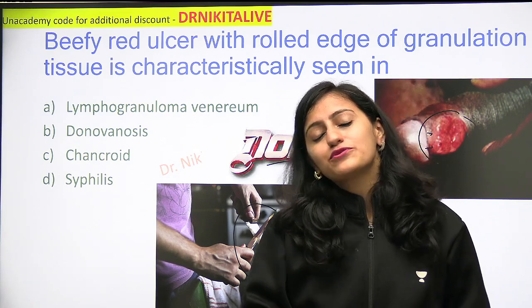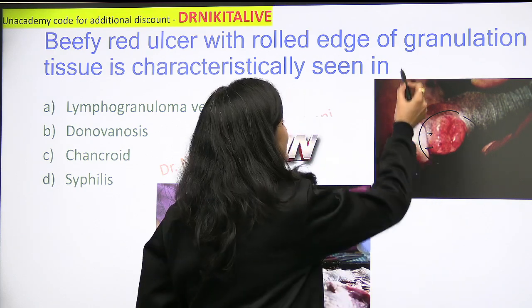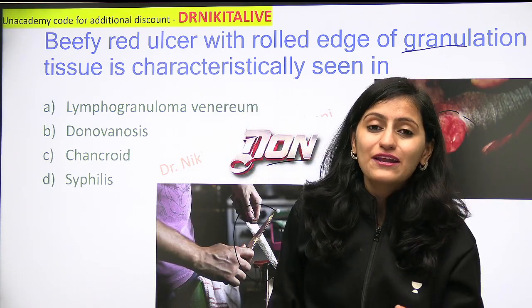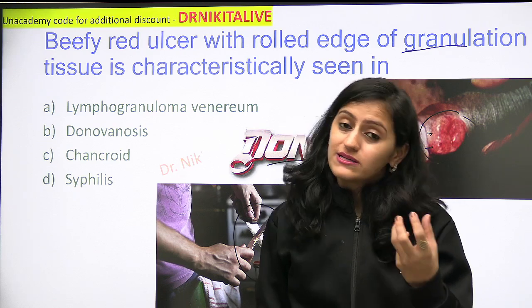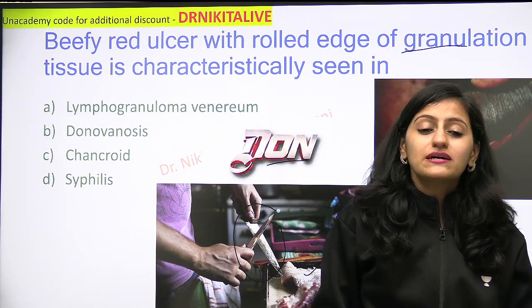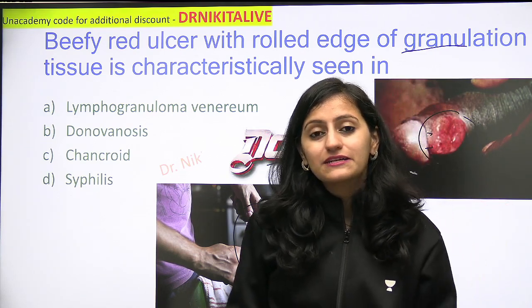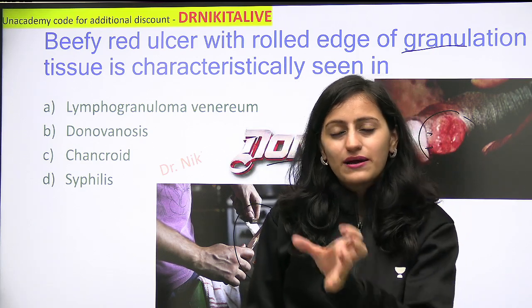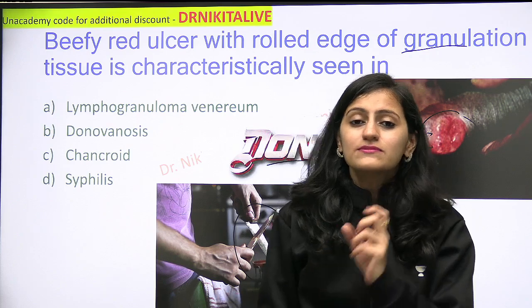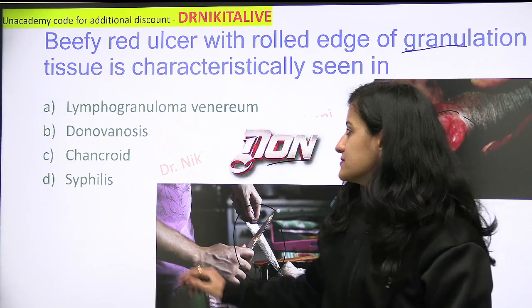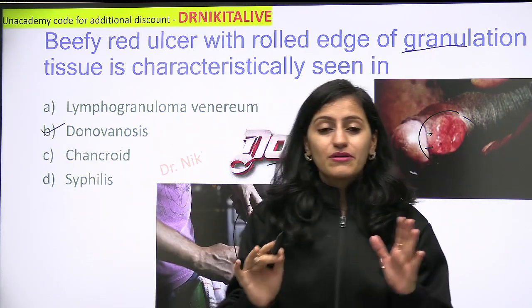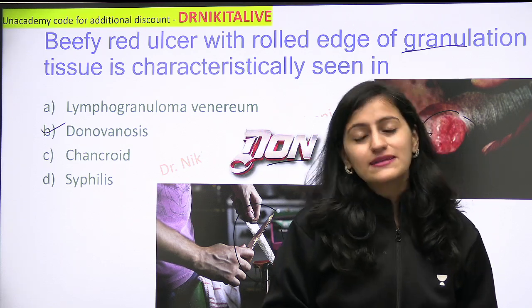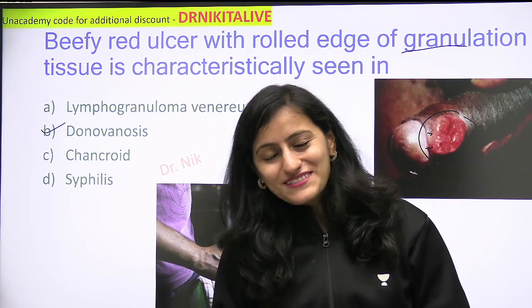The other name for Donovanosis — because it has granulation tissue — is granuloma inguinale. The organism is Klebsiella granulomatis, previously called Calymmatobacterium granulomatis. So granulation tissue, granuloma inguinale, granulomatis organism — all this is Donovanosis. Remember: dawn, beefy red. That is the beefy red ulcer — a very important mnemonic to remember.